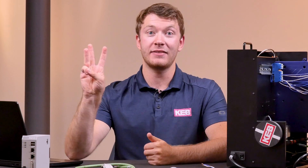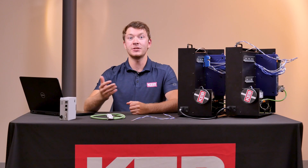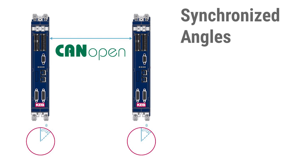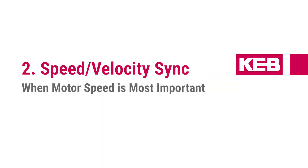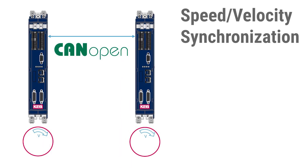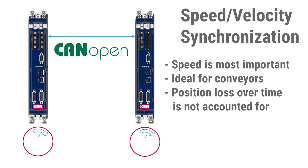CAN cross-communication enables three types of master-follower. The first is angular synchronization, where the position set points of the drives are synchronized together — the actual position of the master drive is transmitted to the follower drive as a set point position. This is important for applications like winders. The second type is speed synchronization, where the speed set point of the master drive is transmitted to the follower as a speed set point. This is critical for applications like conveyors, though position lost over time is not accounted for with this type of control.